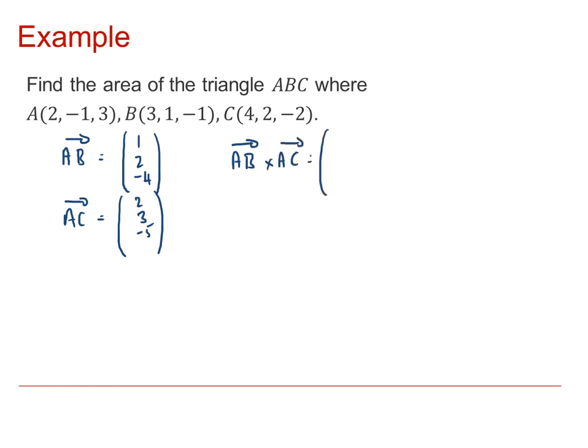Therefore we can calculate the vector product of AB with AC as being equal to the product 1, 2, negative 4 cross product with 2, 3, minus 5. You can either do that on a calculator or use the formula that's in your formula sheet and you should be able to show that that is equal to 2, minus 3, minus 1.